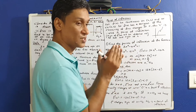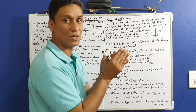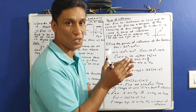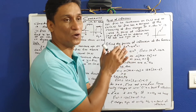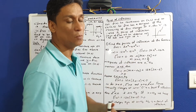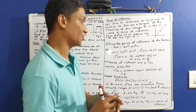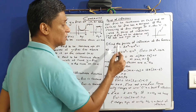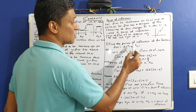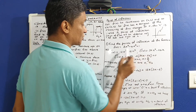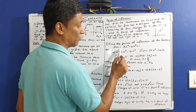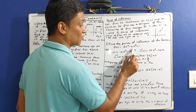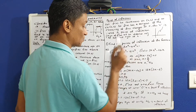c is the point of inflection. Now, find the points of inflection of the function f of x equal to 3x raised to 4 minus 4x cubed plus 1.